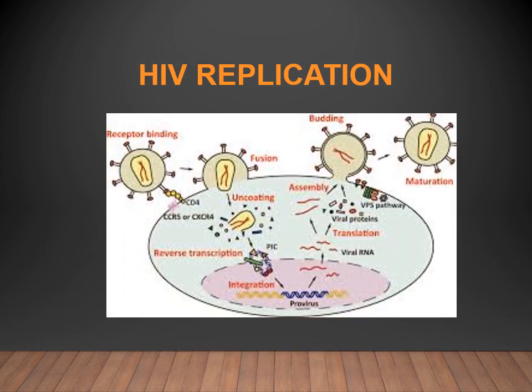The replication cycle can be summarized as: receptor binding, fusion, uncoating with release of RNA and enzymes, reverse transcription from RNA to DNA, formation of the pre-integration complex that moves to the nucleus, integration of viral DNA into the host chromosome as provirus, replication, and infection of neighboring cells.